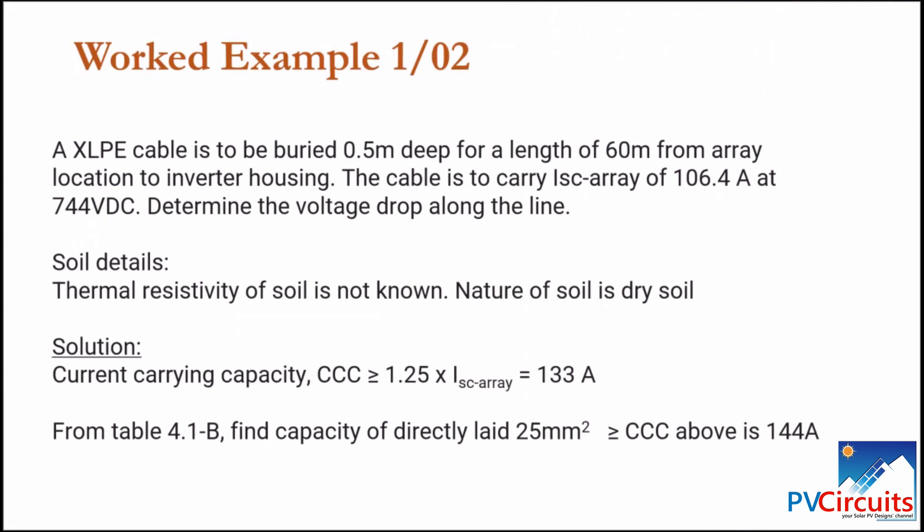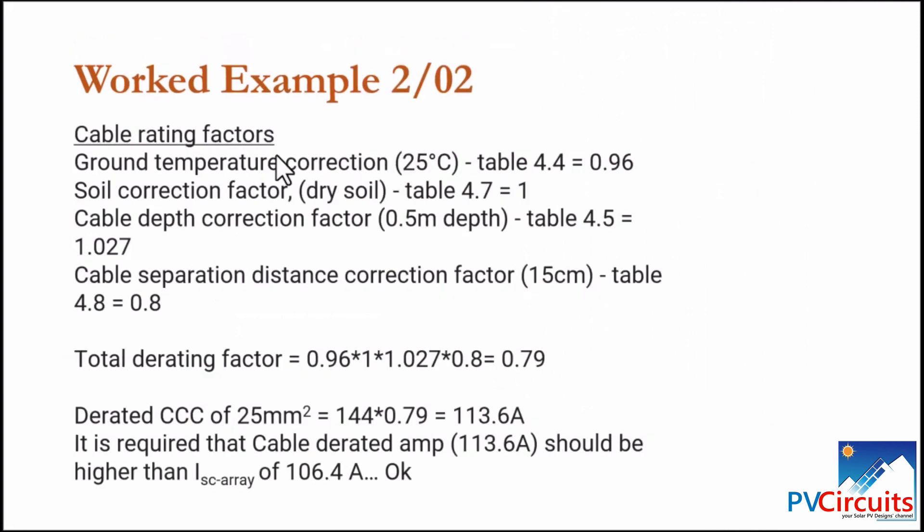After seeing the properties in those tables, let's continue with our problem. From the tables, what we have seen, we have the ground temperature correction at 25 degrees, table 4.4, which gives us 0.96. Then, soil correction factor, this is dry soil. We saw that is 1. Then, depth correction factor for 0.5 depth, table 4.5, we found that the factor there is 1.027. And the cable separation distance correction factor, 15 cm. We saw that was 0.8. The total derating factor is the multiplication of all this. And if you combine all those factors, you get 0.79.